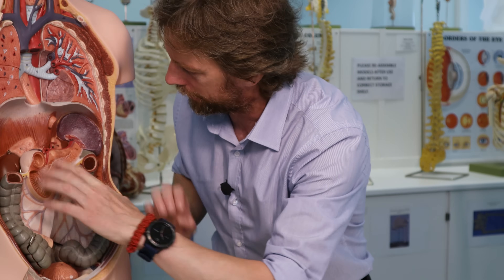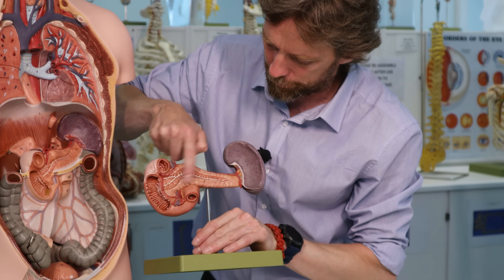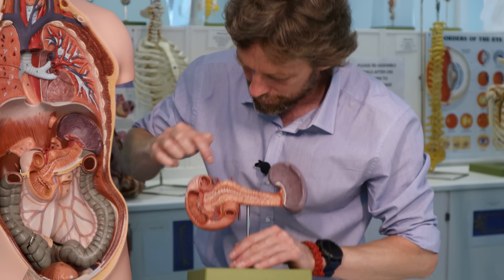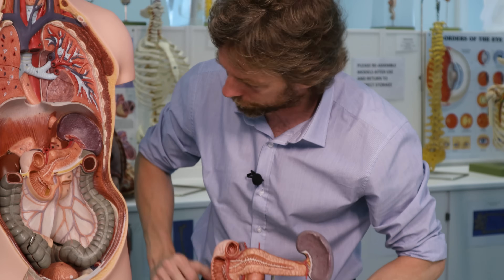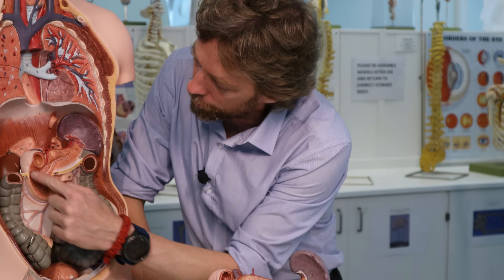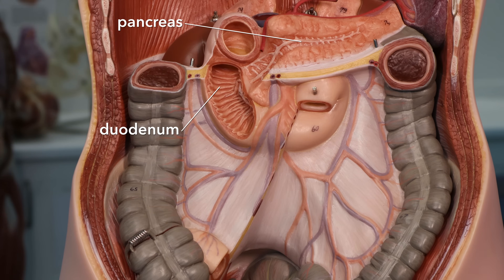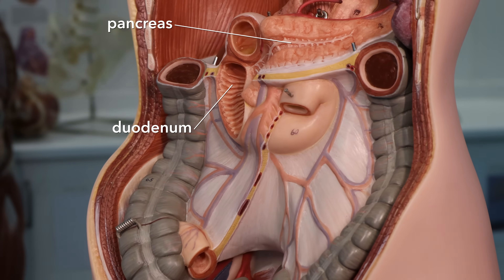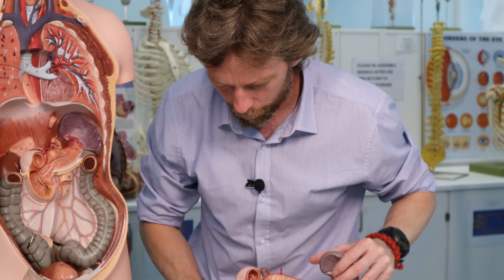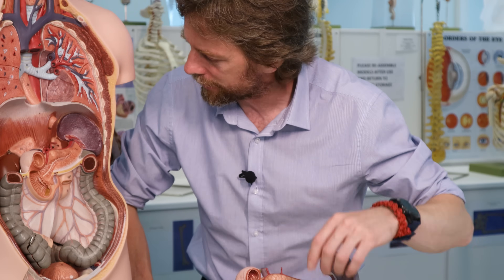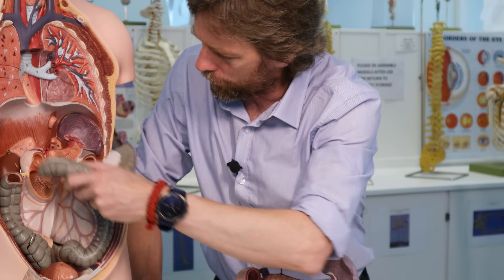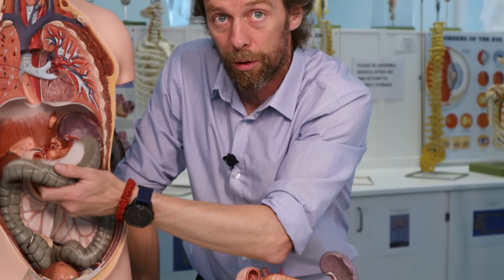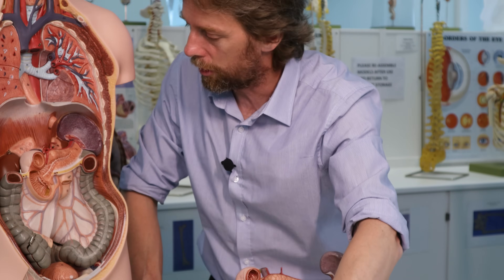Looking at the model, we can see the pancreas and duodenum with some blood vessels. We're looking at the same region twice from different angles. The transverse colon has been taken off to show the structures underneath.